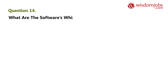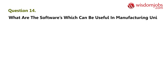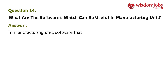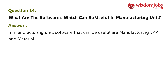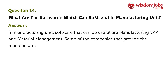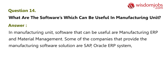Question 14: What are the softwares which can be useful in a manufacturing unit? In a manufacturing unit, useful software includes manufacturing ERP and material management systems. Some of the companies that provide manufacturing software solutions are SAP, Oracle ERP system, and others.